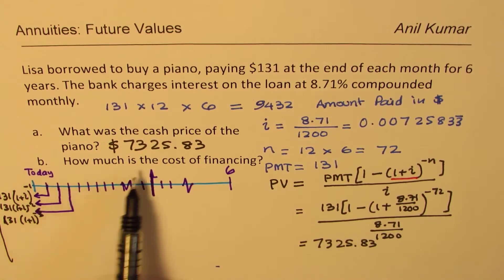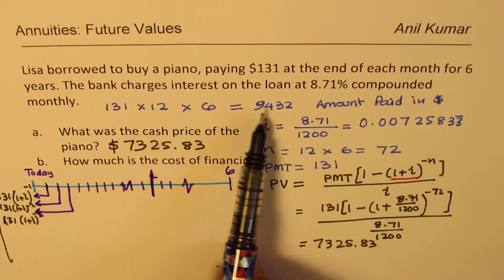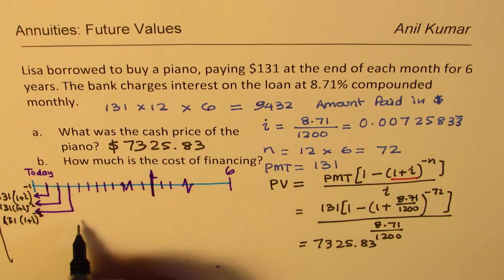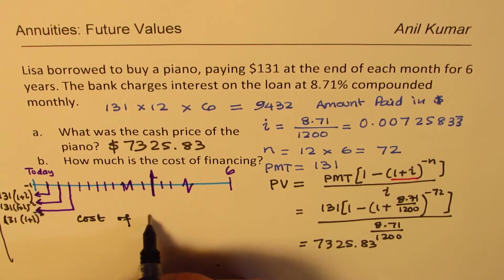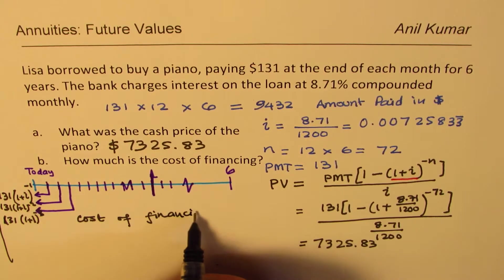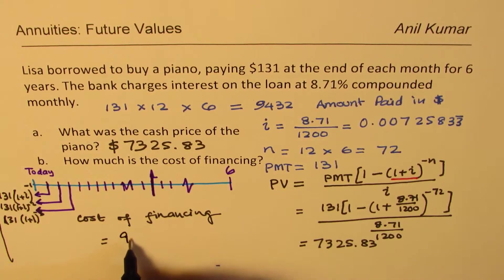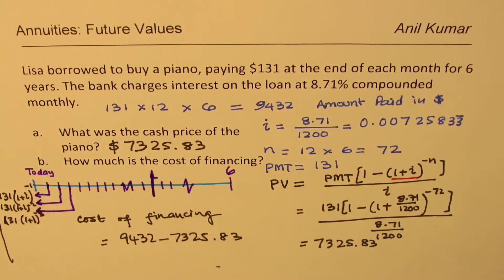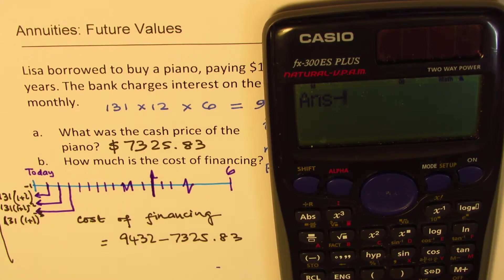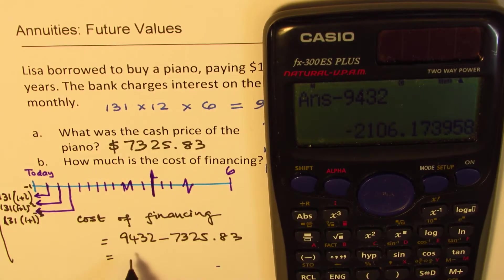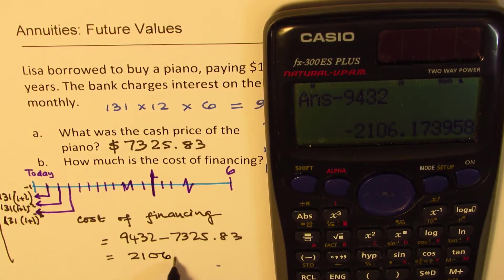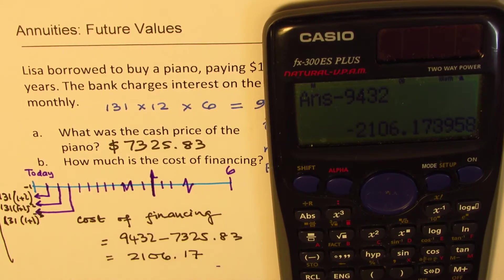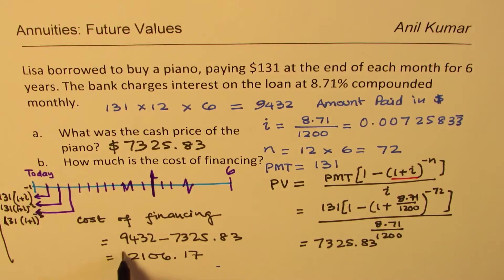How much is the cost of financing? See, actually paid $9,432, so the cost of financing will be the difference of the two, right? So the cost of financing is equal to $9,432, take away this amount, which is $7325.83. So I'll actually, I have the value, I'll just take away $9432 from it, and write negative of whatever we get. So we get $2106.17. So that is the cost of financing. All answers are in dollars.